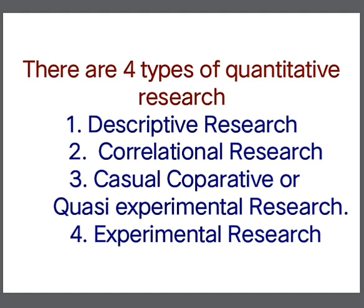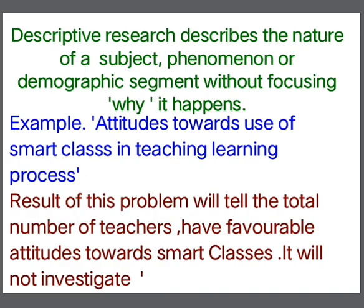For example, correlational research is a type of quantitative research, so that type of question may be asked. Now, descriptive research: descriptive research describes the nature of a subject, phenomenon, or demographic segment without focusing on why it happens.